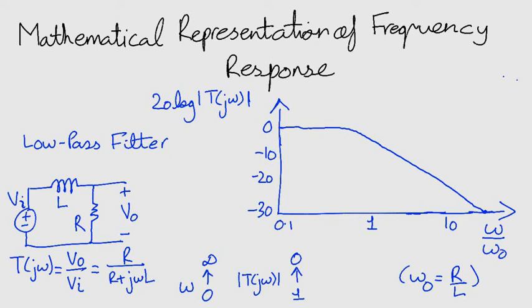It is useful to know the time constant of these circuits. And for this one, the time constant tau is L over R.